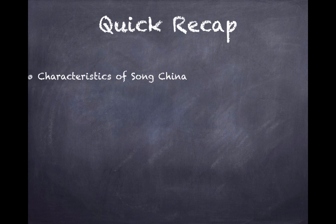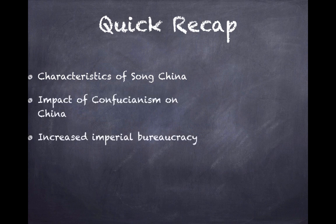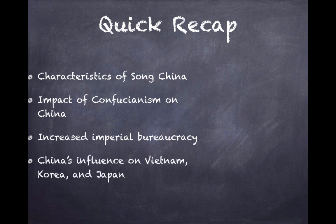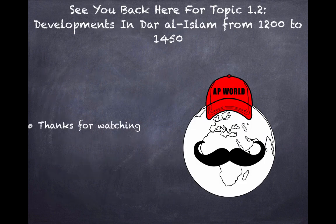Let's wrap up with a quick recap. You should be familiar with: characteristics of Song China, the impact of Confucianism on China, increased imperial bureaucracy, China's influence on Vietnam, Korea, and Japan, and the impact of Buddhism in China. Thanks for watching — I look forward to seeing you back here for Topic 1.2: Developments in Dar al-Islam from 1200 to 1450, where we'll be talking about Islam, Judaism, and Christianity. Best of luck, and we'll see you back for more videos!